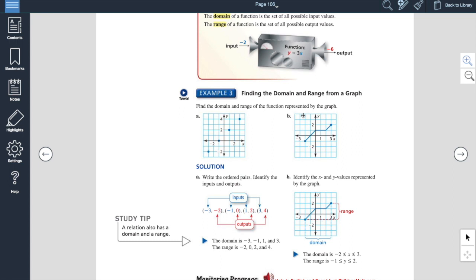So on this one, I'd ask you guys to find the domain and range of the function represented. Remember, the domain are your x values, your inputs. So this point right here has an x coordinate of negative three. This point right here has an x coordinate of negative one. This one has an x of one and this one has an x of three. So your domain for this would be negative three, negative one, one, and three. The range is the output. The output. So the y values. This one goes down negative two. So negative two. This one is zero. Positive two and positive four.